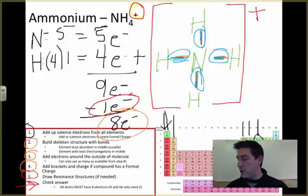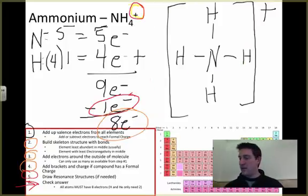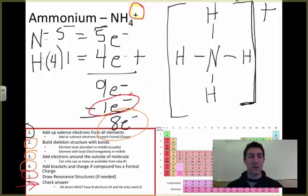I'm going to erase this and show you the real one. Here's the cleaned up version of what we just did. Notice we have the plus up above our brackets to show that this whole thing, everything that we drew inside these brackets, is missing one electron. One electron had to go away in order for this to form.